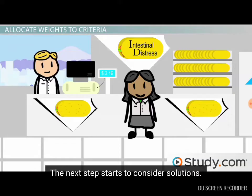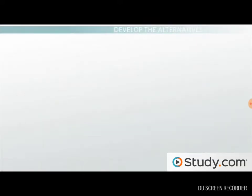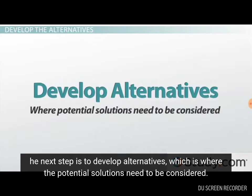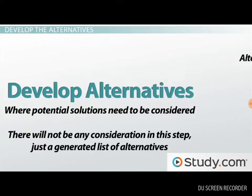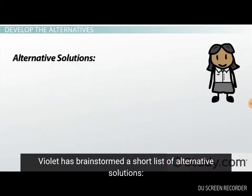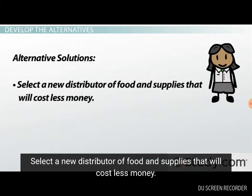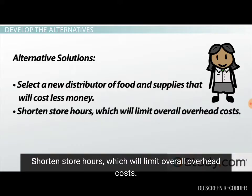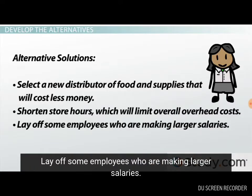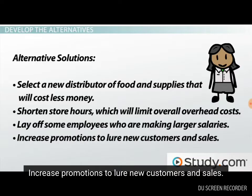The next step starts to consider solutions. The next step is to develop alternatives, which is where the potential solutions need to be considered. There will not be any evaluation in this step, just a generated list of alternatives. Violet has brainstormed a short list of alternative solutions: select a new distributor of food and supplies that will cost less money; shorten store hours, which will limit overall overhead costs; lay off some employees who are making larger salaries; or increase promotions to lure new customers and sales.